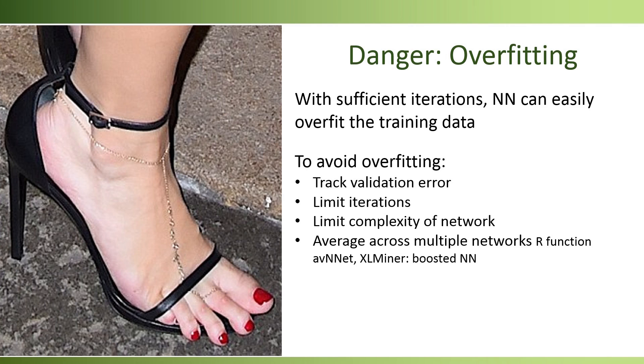We can limit the number of iterations or epochs. We can keep our network as simple as needed. And finally, we can combine the results from multiple networks using averaging. The R function AVN net and XLMiner's boosted neural networks perform exactly such averaging.